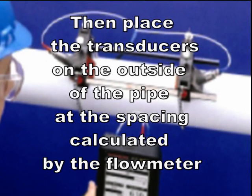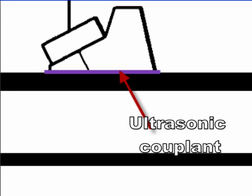We then place the transducers on the outside of the pipe, the spacing calculated by the flow meter. We also need to place an ultrasonic couplant between the transducers and the pipe, because an air gap will stop the ultrasonic signal.